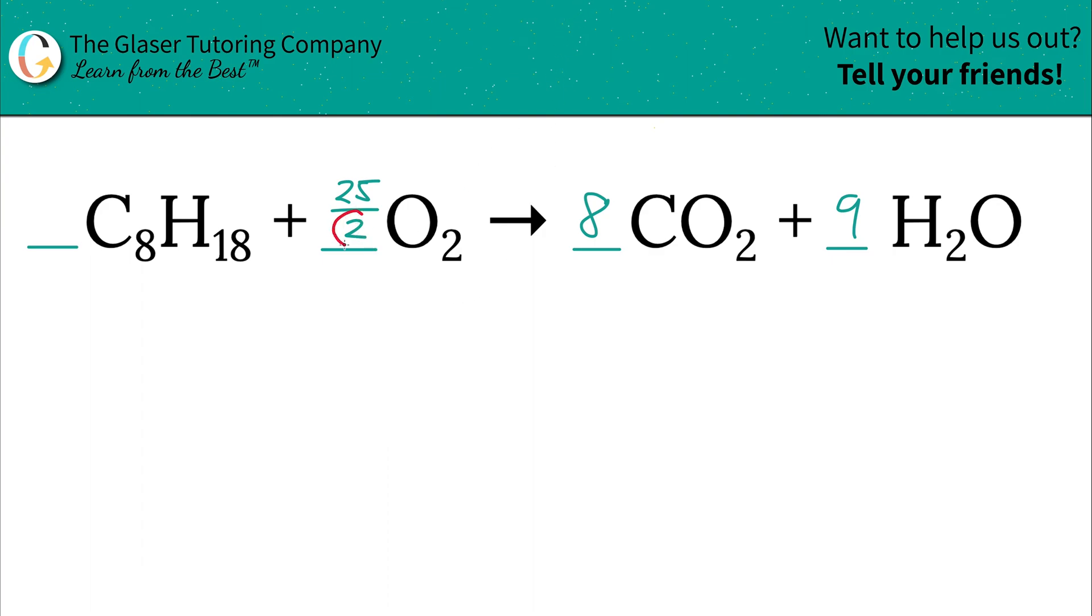Now I promise you this is very easy. Whatever your denominator value is now of your fraction, that's why the fraction is actually going to be useful. Whatever your denominator value is of the fraction is simply going to be the number you're going to multiply every single coefficient by. Now, if you don't see a coefficient, like you didn't see a value here, just place in a one for now. So this denominator value of two, you're going to do two times one. Then you're going to do two times 25 over two. Then you're going to do two times eight and two times nine. That's what you're going to do.